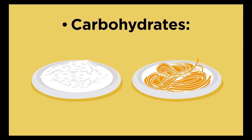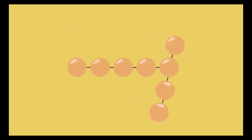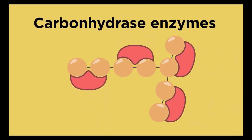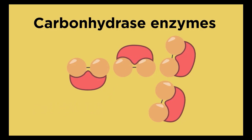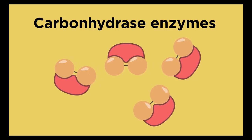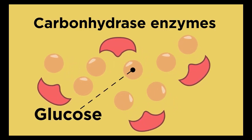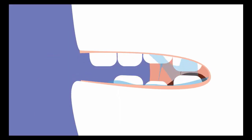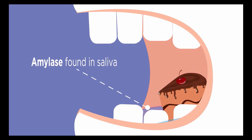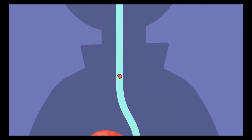Carbohydrates like rice and pasta are made of carbohydrates; the simplest are sugars which join into chains to make complex carbohydrates like starch. Carbohydrates are digested by carbohydrase enzymes such as amylase. Amylase breaks down starch into smaller molecules, which are further broken down into glucose small enough to enter the blood. Amylase is found in saliva, where carbohydrate digestion first begins chemically, and another amylase is released into the small intestine from the pancreas.